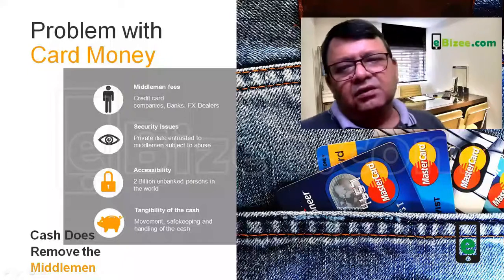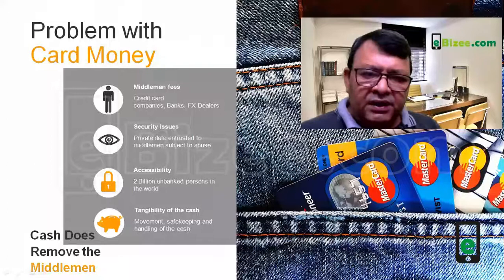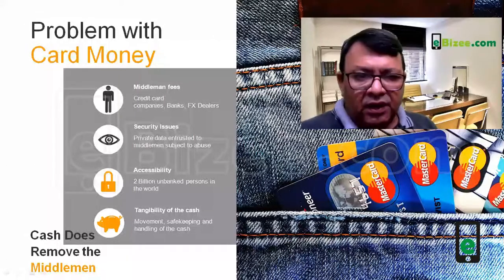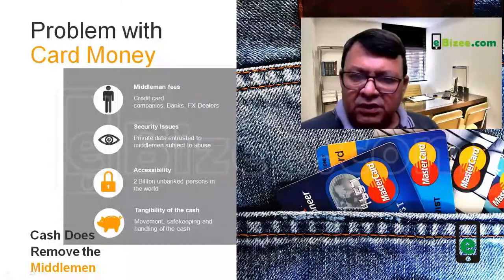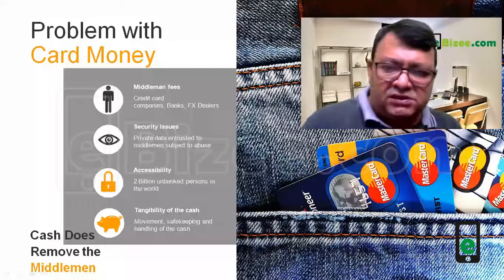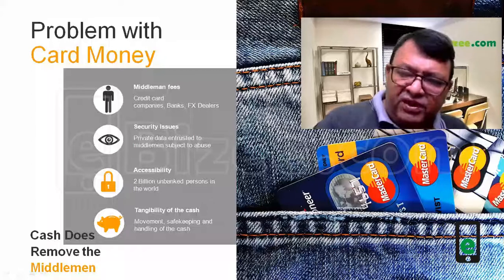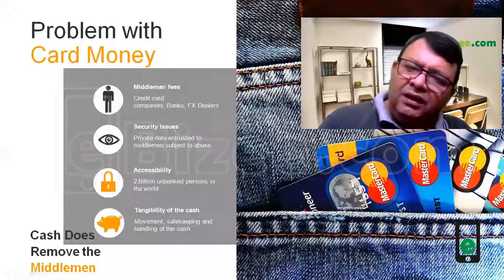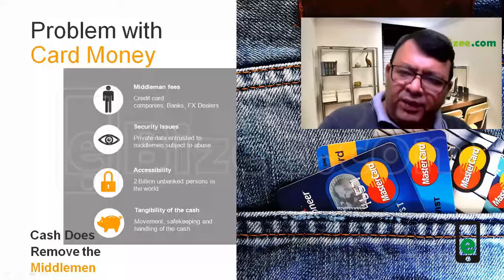What is the problem with the existing architecture of financial transactions, especially card money? The biggest problem with card money is the fees we pay to the middleman — credit card companies, banks, merchants, and foreign exchange dealers, especially for international transactions. We end up paying a lot in middleman fees, markup fees, and foreign exchange dealer fees, making card money, if not prohibitive, definitely expensive.